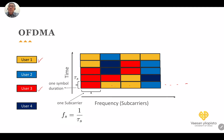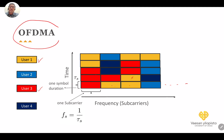In LTE Advanced we have more than 2,000 subcarriers that we can allocate for users. In the second time slot, we might allocate two subcarriers for user 3 and one subcarrier for user 1. This gives us high flexibility in allocating subcarriers based on user requirements — for example, if one user wants a very high data rate, we allocate a higher number of subcarriers for that user. This is called OFDMA — Orthogonal Frequency Division Multiple Access.